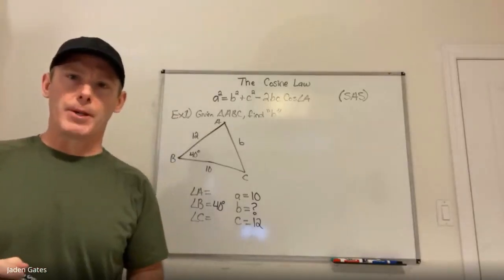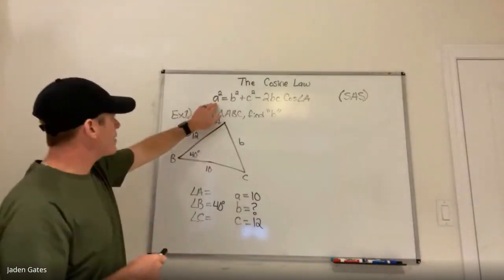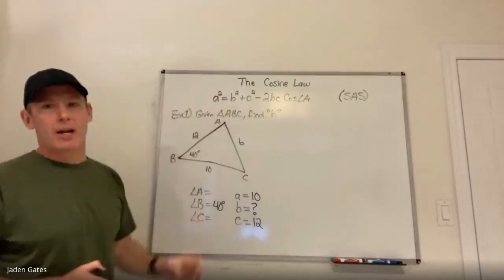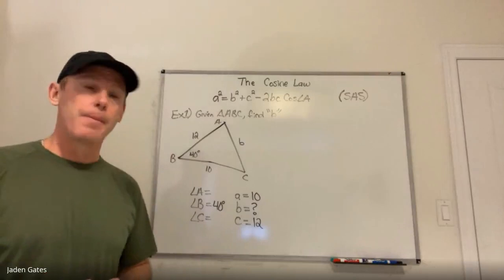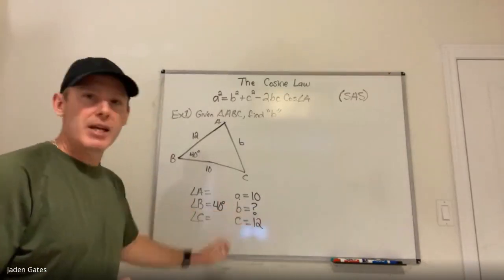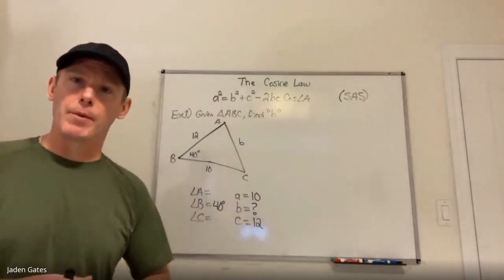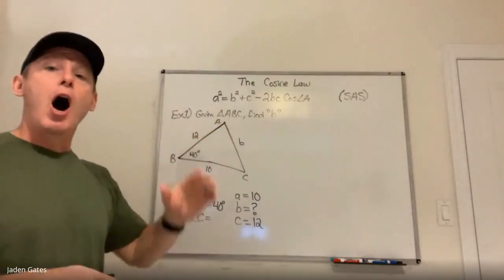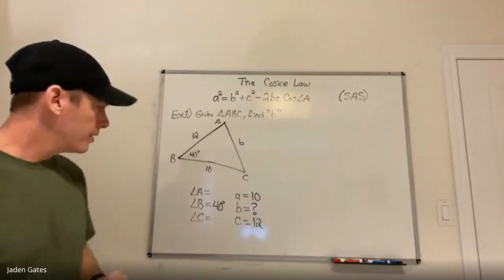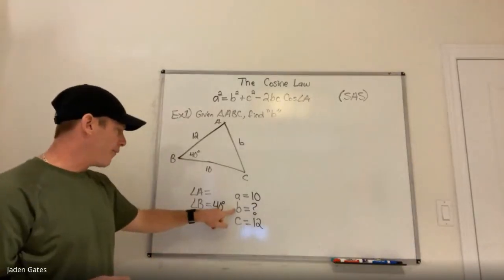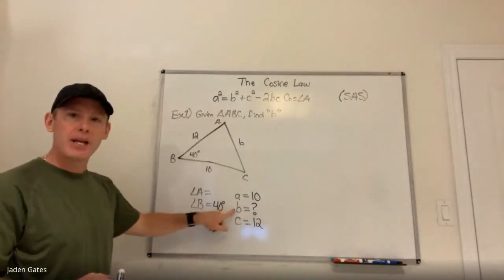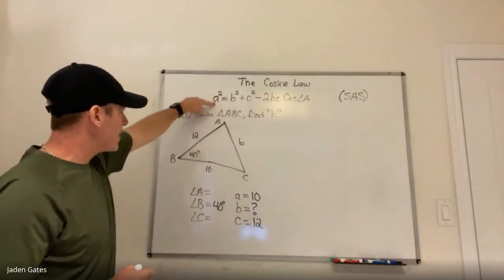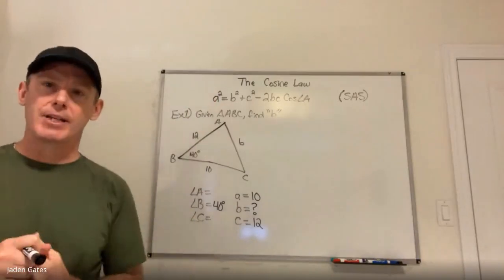Here's the trick with this formula. You see that it says a squared equals b squared plus c squared — there's just the a squared on this side of the formula, but I'm trying to find side b. So here's a little trick: when I substitute in, I don't have to rearrange things. I'm going to rewrite this formula in order to solve for b, by switching my a's and b's.